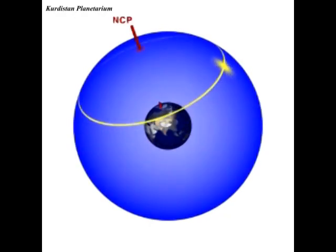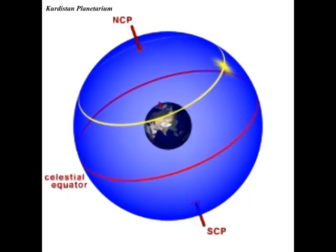There is a celestial South Pole as well, and the celestial equator circles the sky halfway between the poles.